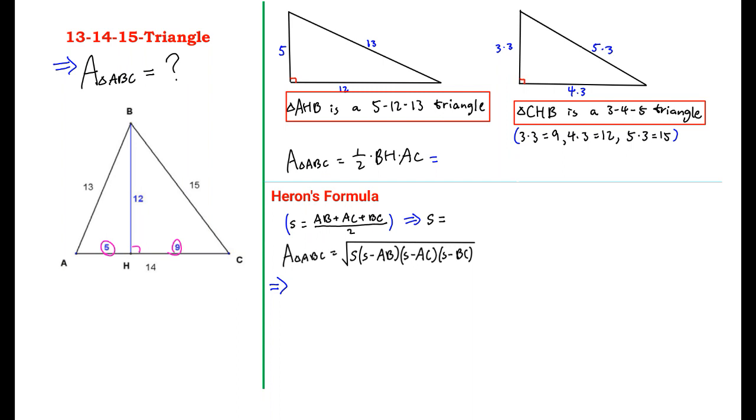Now to find the area of triangle ABC there's two ways. One way is base times height which is AC and BH. So the area of triangle ABC is 1/2 times 12 times 14 which is equal to 84.